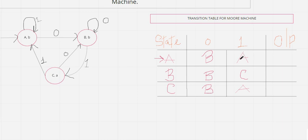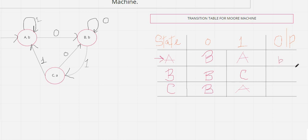Looking at the table: state A on input 0 goes to state B; state A on input 1 goes to itself (A). State B on input 0 goes to itself (B); state B on input 1 goes to C. State C on input 0 goes to B; state C on input 1 goes to A. For the output column: state A has output 'b', state B has output 'b', and state C has output 'a'.